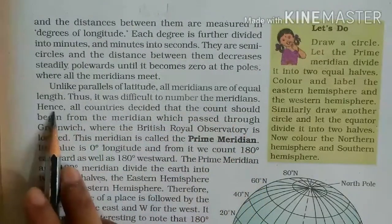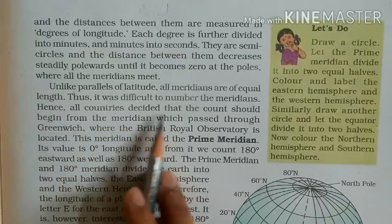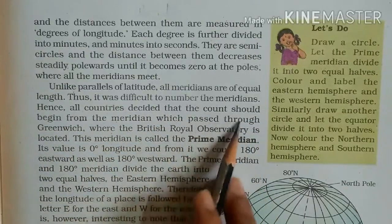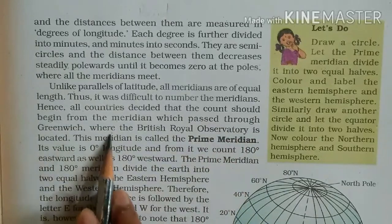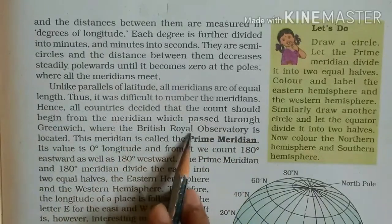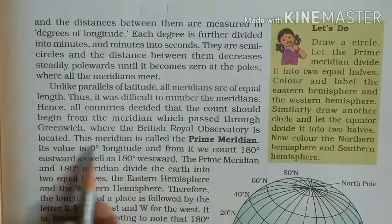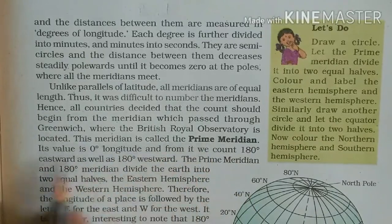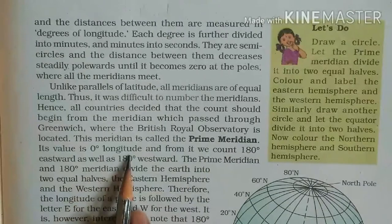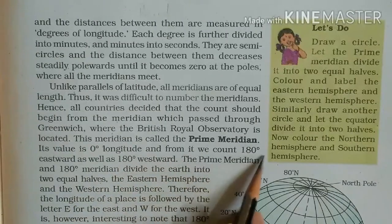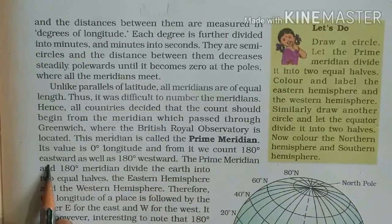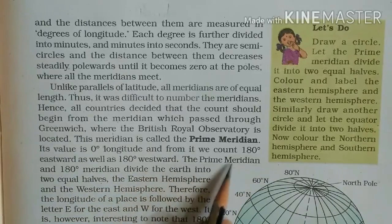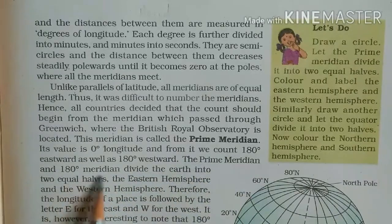Unlike parallels of latitude, all meridians are of equal length. Thus it was difficult to number the meridians. Hence all countries decided that the count should begin from the meridian which passed through Greenwich, where the British Royal Observatory is located. This meridian is called the prime meridian. Its value is zero degree longitude.